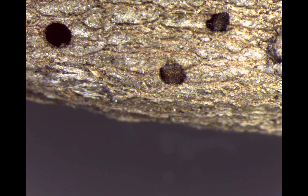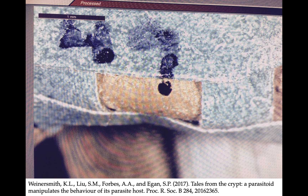In order to say manipulation is happening, one of the things you need to show is that the weird host behavior is benefiting the parasite. So how does the host creating an emergence hole which it plugs with its head benefit the parasitoid? If you tape a thin piece of bark over the head of the host as it plugs an emergence hole, the crypt keeper wasp is three times more likely to die trapped in the crypt relative to crypt keeper wasps that only need to get through the host head. So it seems like the crypt keeper wasp is not good at excavating its own emergence holes — perhaps its mouthparts aren't as strong as those of its host — and it needs the host to create an emergence hole for it. That's not to say parasitoids can never get out; here is a hole made by a crypt keeper wasp that did manage to get through the bark.